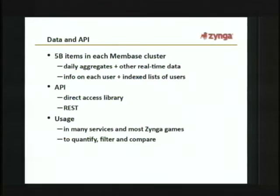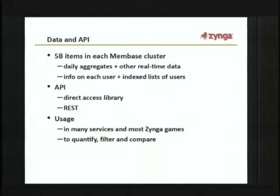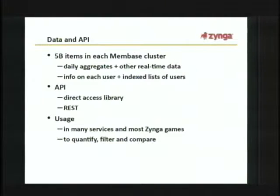We have about five billion items — some are aggregates mentioned earlier, and some are data writable by the games as well. The games use that storage to communicate certain interesting data across different games. For example, we want to detect if a user made a purchase in one game, and that might trigger certain actions in another game. That's how we use Membase to communicate that.